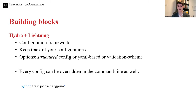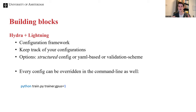The first building block is Hydra and Lightning. Hydra is a configuration framework that allows you to keep track of configurations elegantly and consistently. There are a few options: a structured config which is a Python API — the one implemented in the code — a YAML-based option, and a validation scheme which is a mix. The structured config is the easiest, which is why it's implemented here.